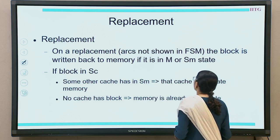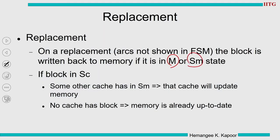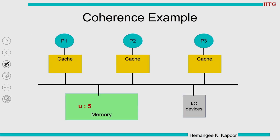If the block is in SC, you need not update memory because either another block in SM will update it, or memory is already up to date. So replacement: only write back to memory if the block is in M or SM; otherwise do nothing. The same cache coherence example will show how this is implemented in the Dragon Protocol.